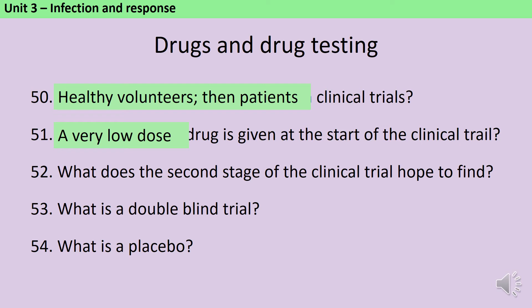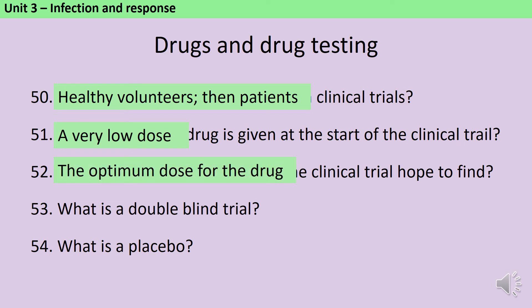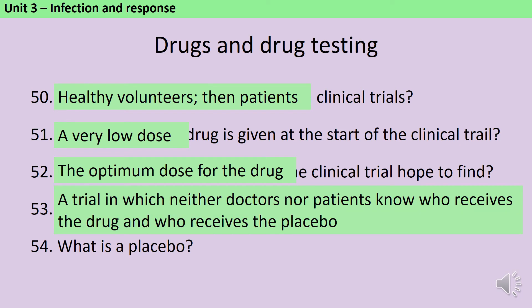The next stage of the clinical trial aims to find the optimum dose for the drug — in other words how much should we be giving people. A double blind trial is one in which the patients don't know whether they're really receiving the drug, and nor does the doctor. A placebo is a kind of fake treatment; in the clinical trial we need two groups, one receiving the new treatment and the others receiving the placebo, which could be something with none of the active ingredient in it, for instance a saline injection or a sugar pill.